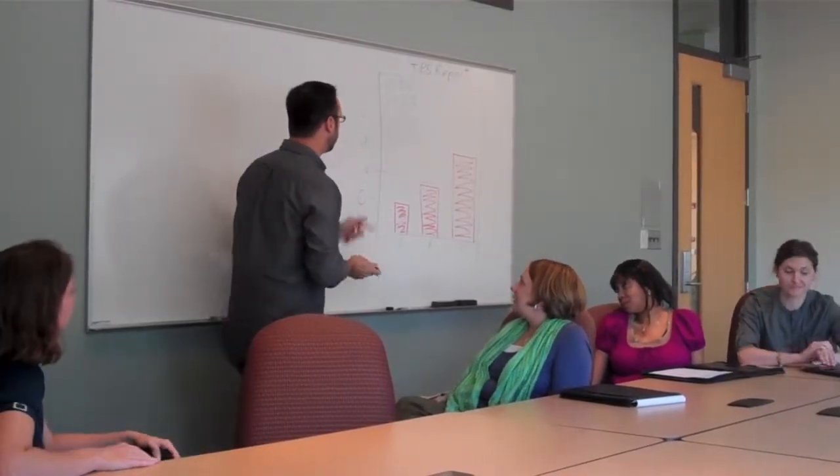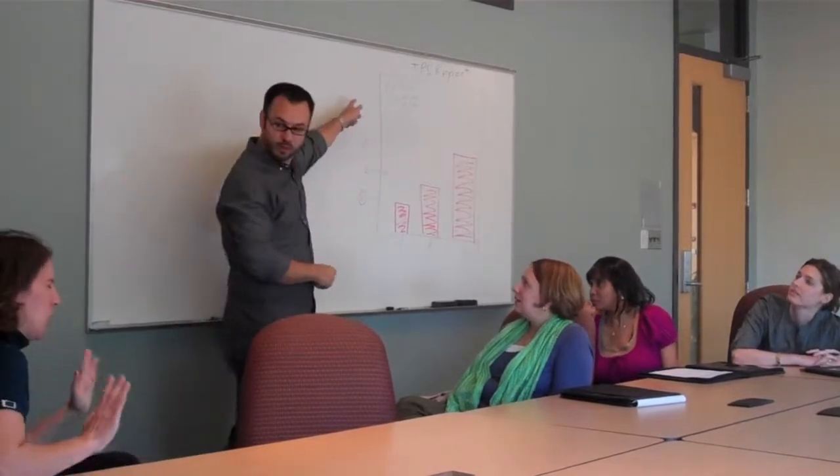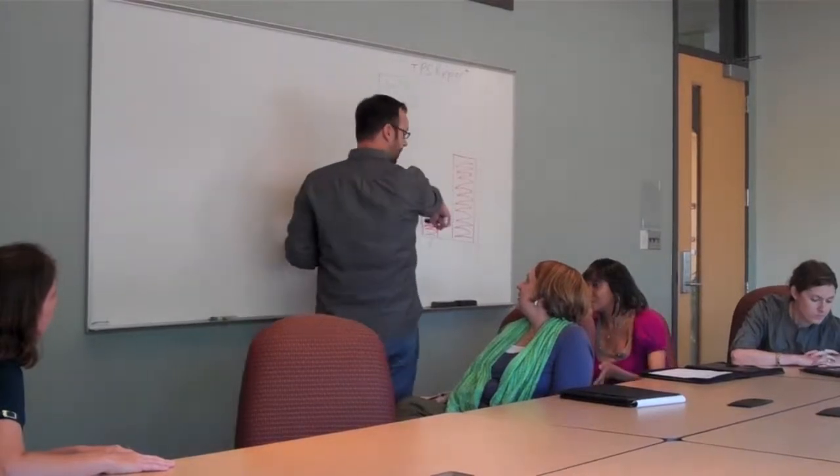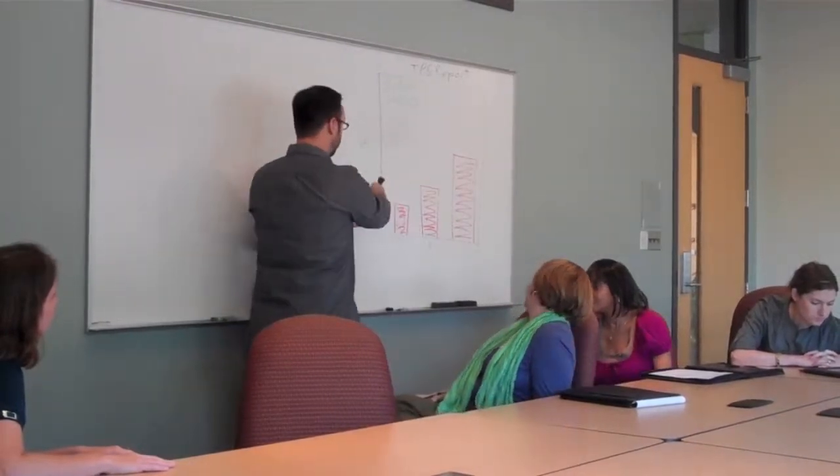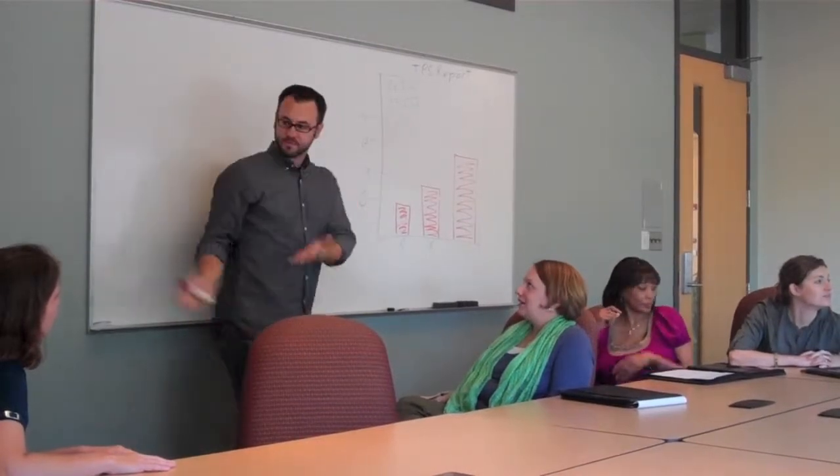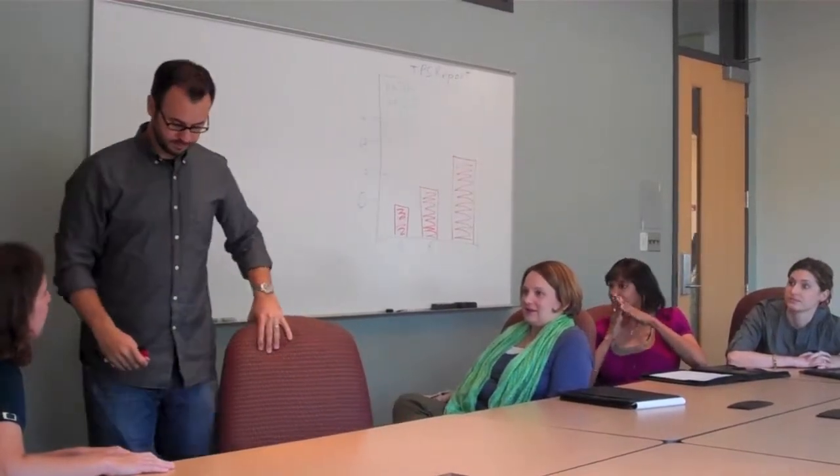Once again, to summarize, x equals 3.14, y equals 12.12, and a, b, c kind of goes along with the 1, 2, 3. So, that's our TPS report. Thanks, boss. Thanks, Mike.